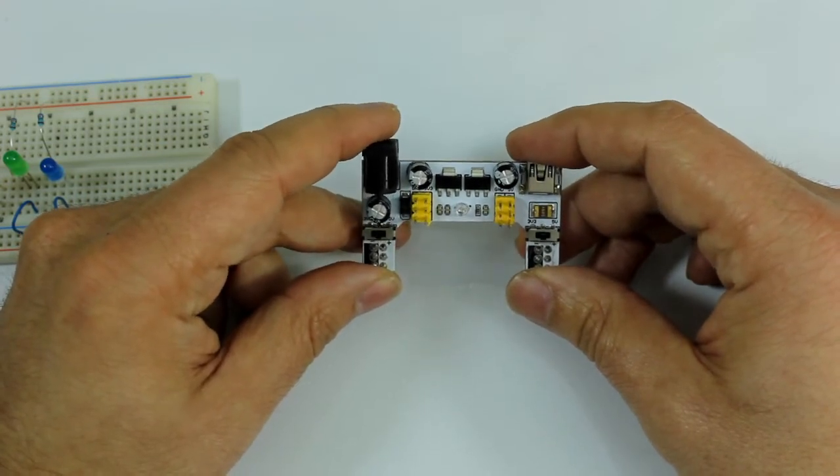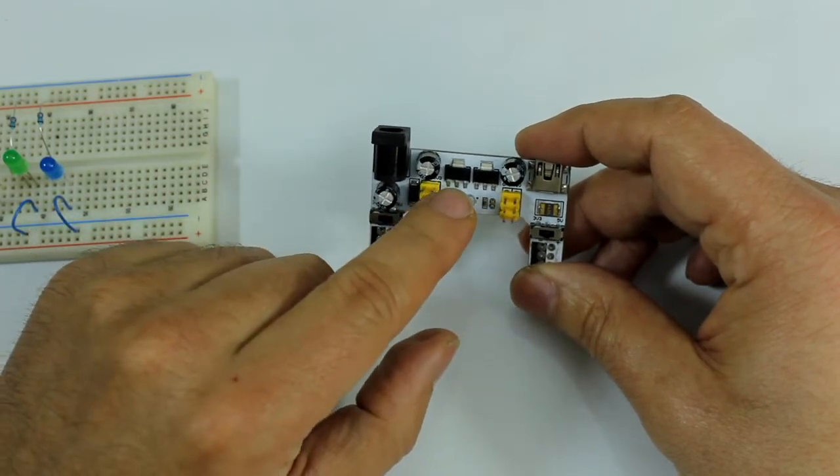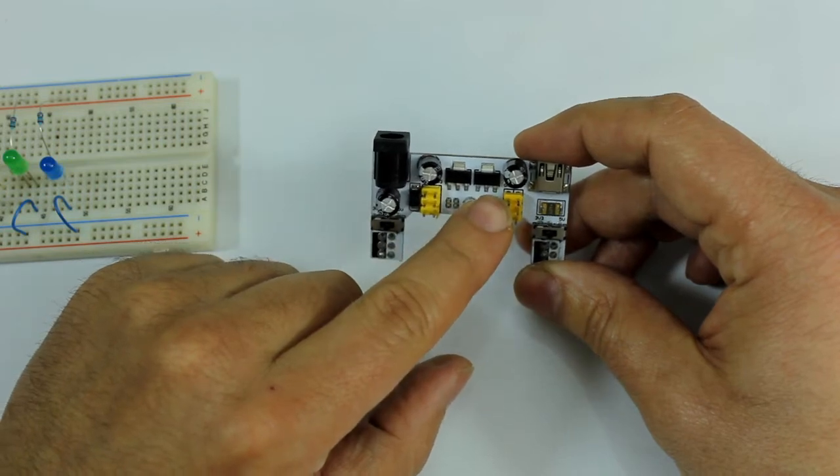They are the fixed versions. We have two because one is for 3.3 volts and the other is for 5 volts.